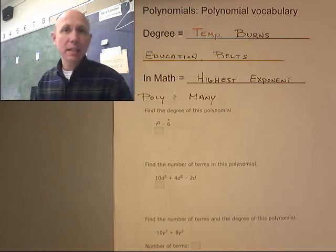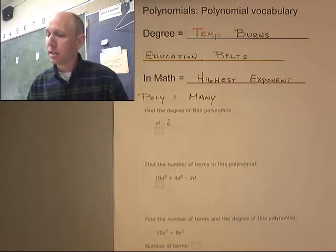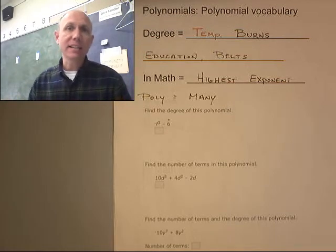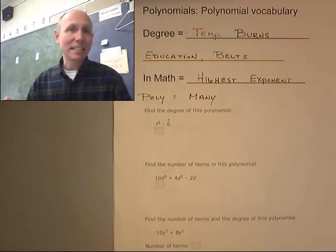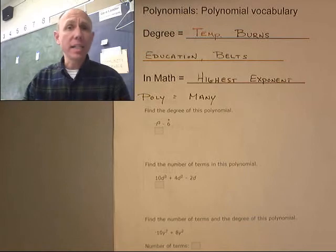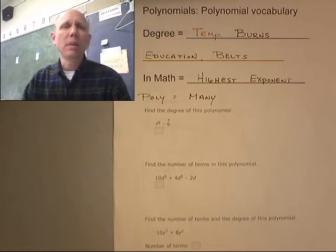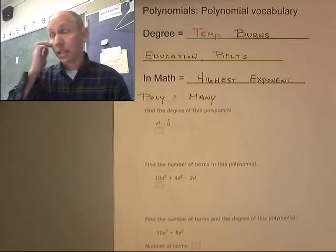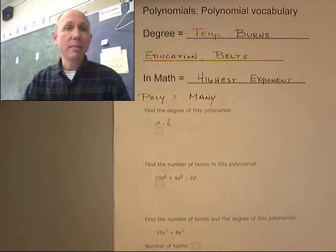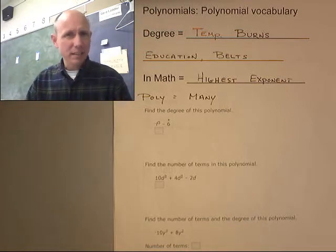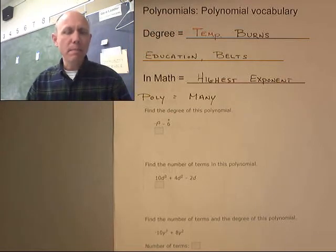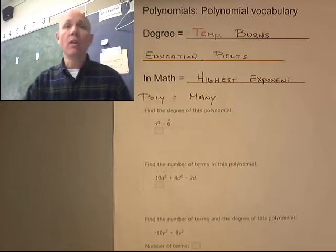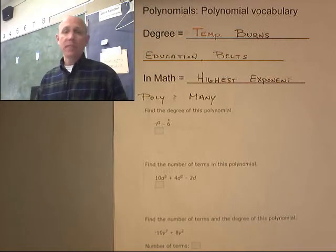Polytheism is the idea or the belief in many gods. What's another poly? A polytechnic, like a polytechnic college or high school, means they have many, usually, technology classes. Polygon, many sides. Polypropylene. I don't know if that's, I should look that up. What is polypropylene? I mean, is it a type of plastic? And is the poly in that mean many, many propylenes? I will look that up for the next video, hopefully.